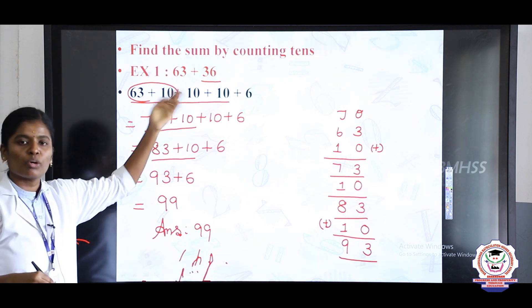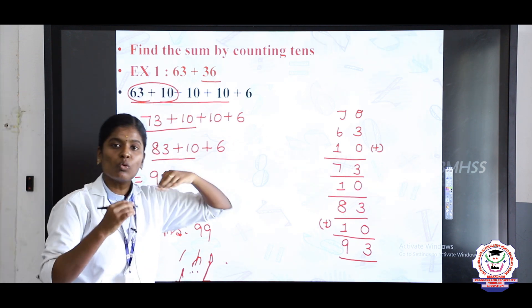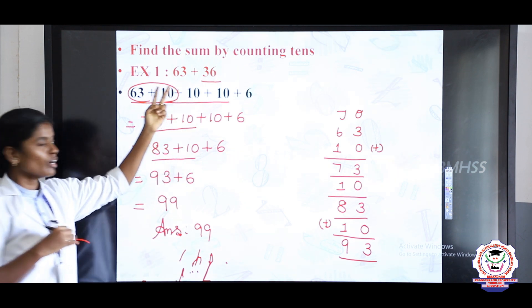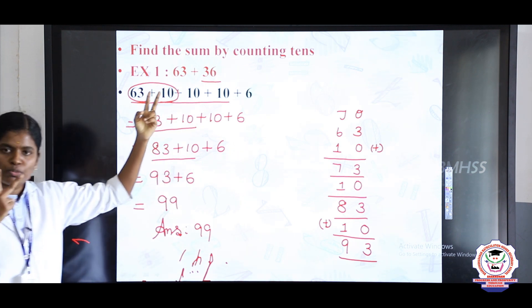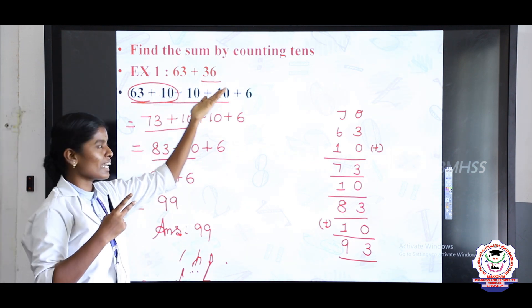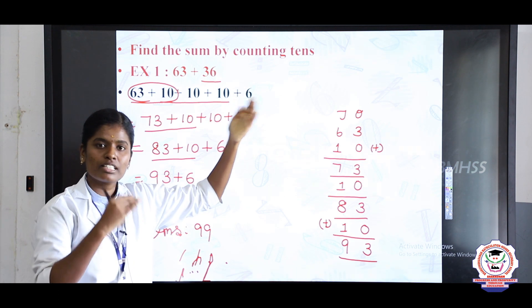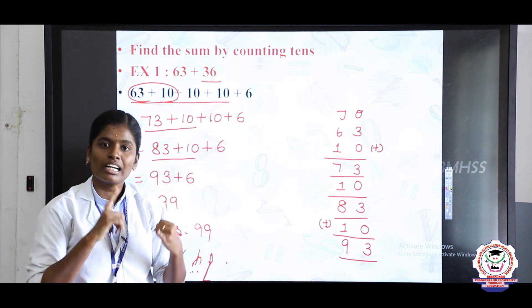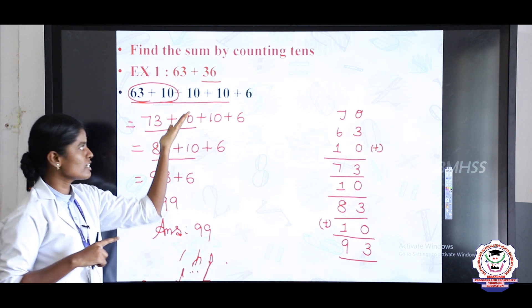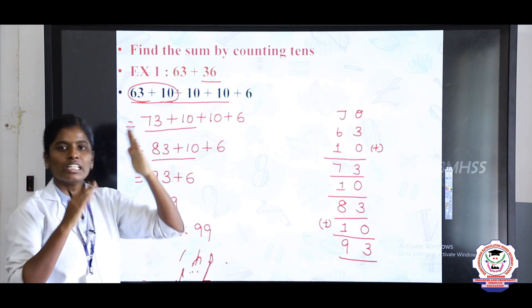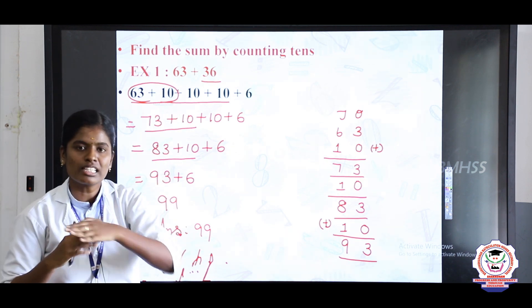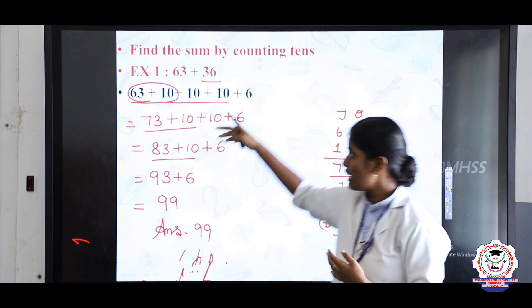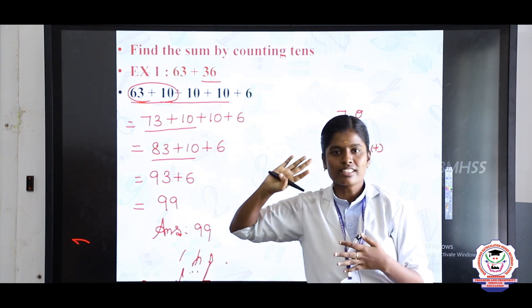Topic: find the sum by counting tens. We have two groups of numbers. Take the right side first number and split it using the counting tens form — 36 means 10 plus 10 plus 10 plus 6. Then add step by step to get the answer.